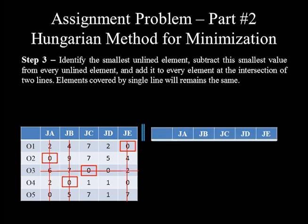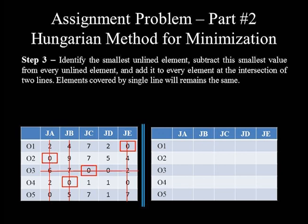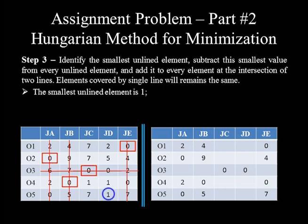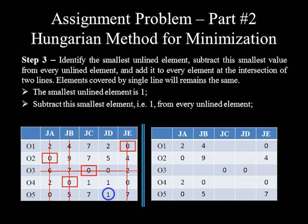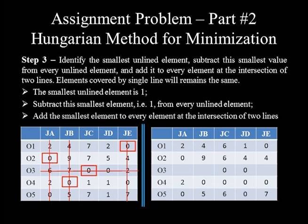Copy a blank table and fill in the 14 single-line-covered elements as they are. The smallest unlined element is 1. Subtracting 1 from each unlined element: 7−1=6, 2−1=1, 7−1=6, 5−1=4, 1−1=0, 1−1=0, 7−1=6, and 1−1=0. Adding 1 to each intersection element: 6+1=7, 7+1=8, and 2+1=3.